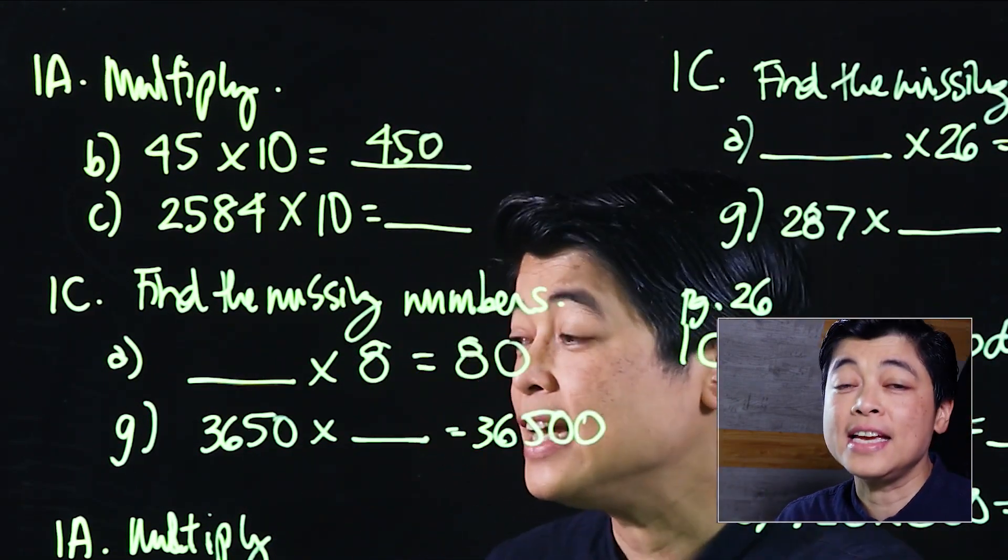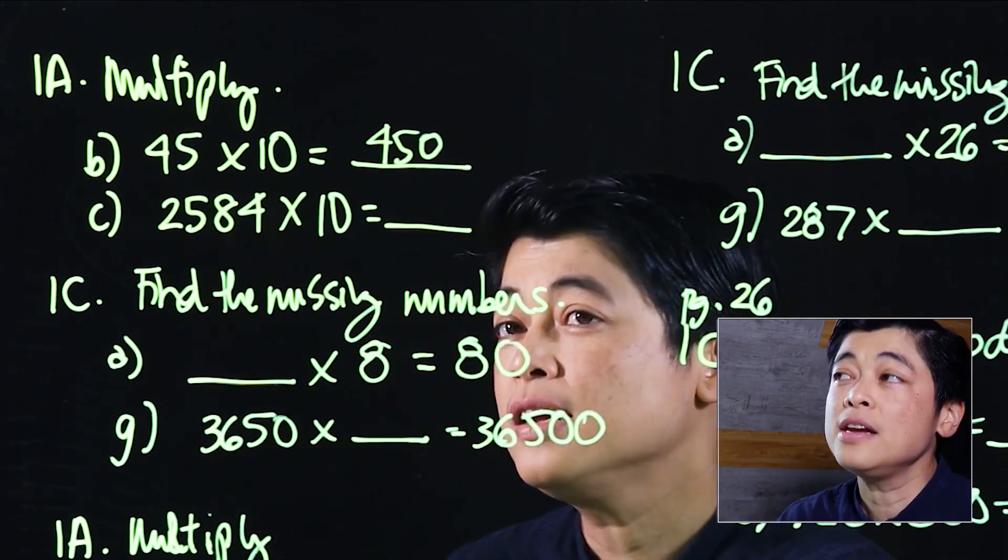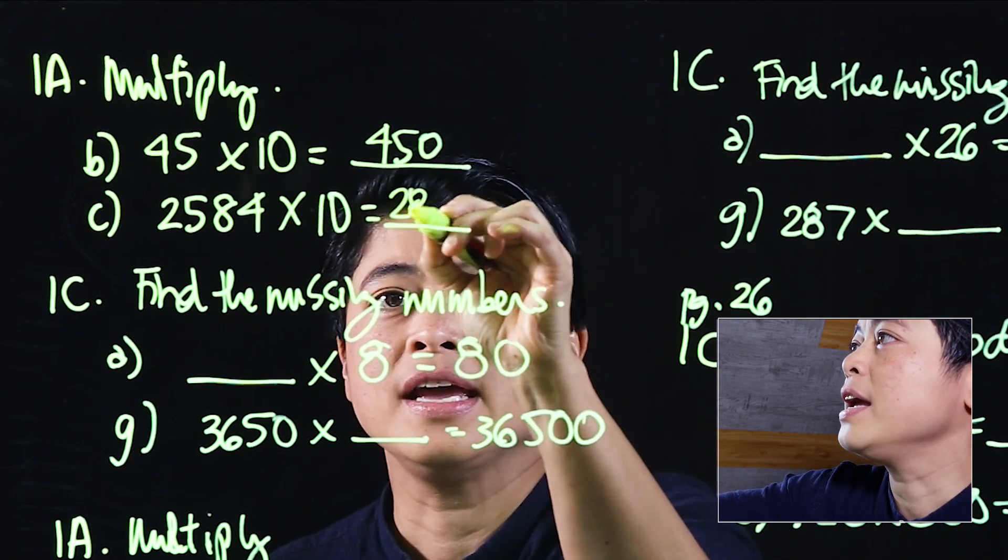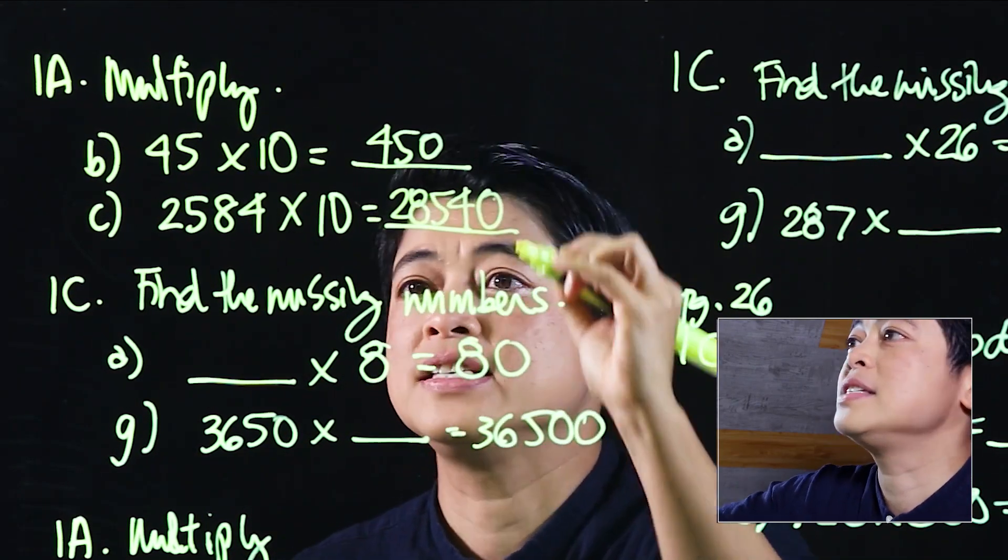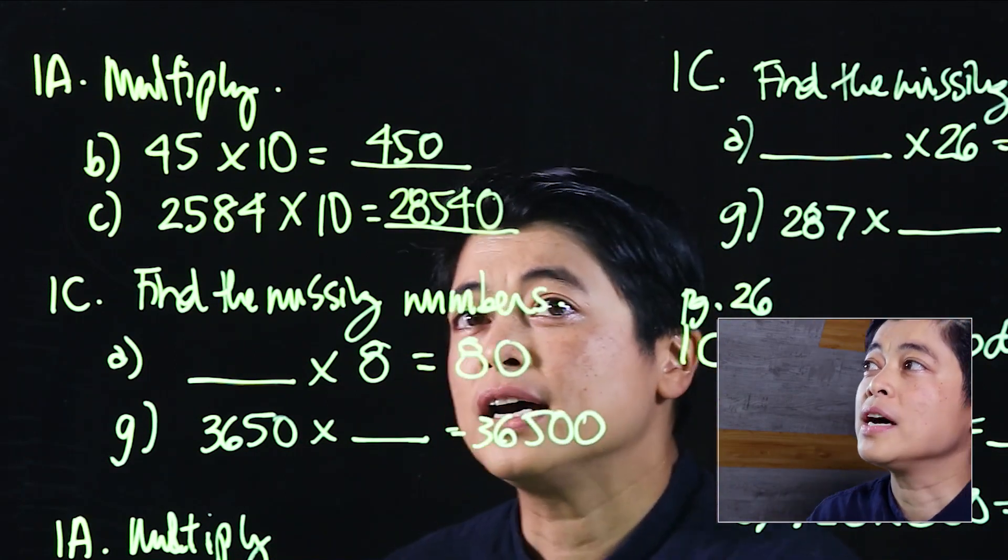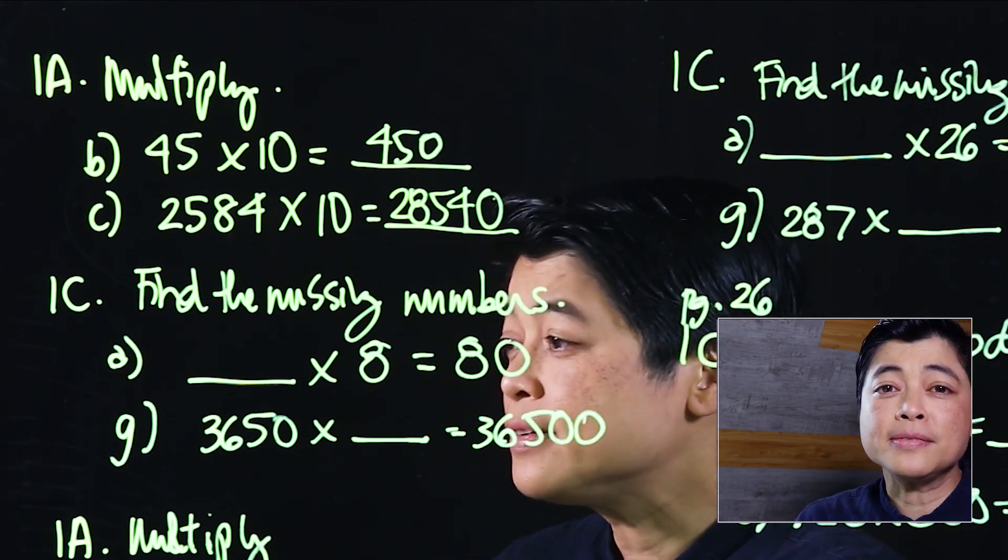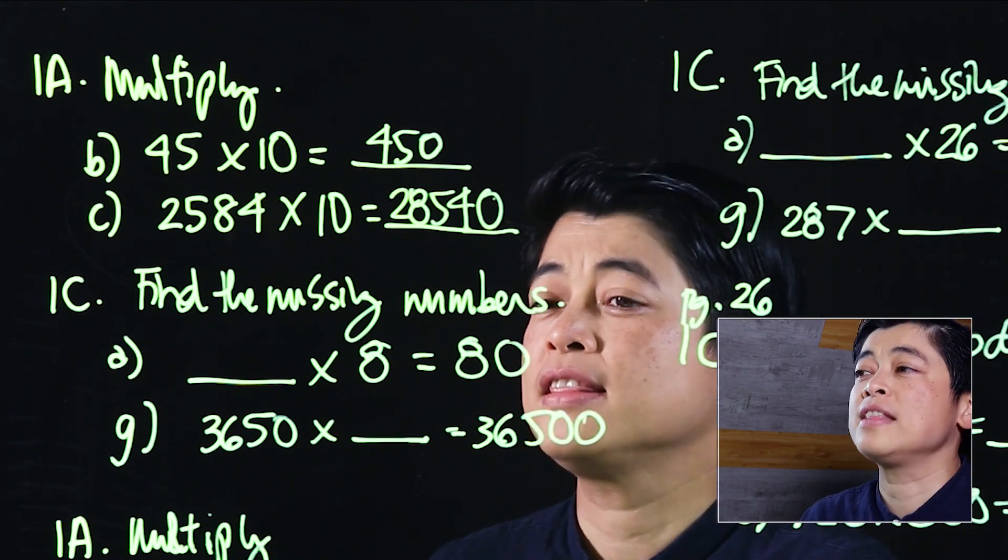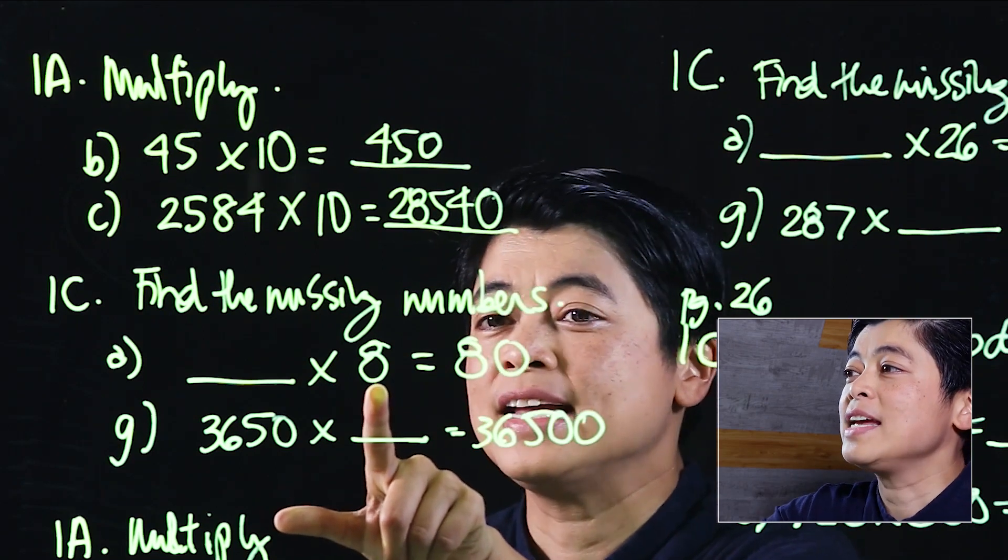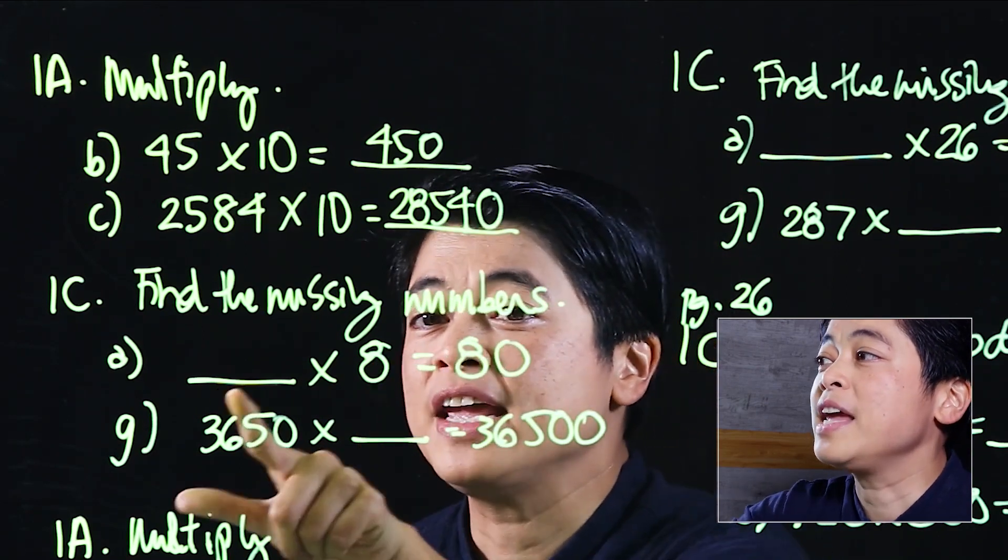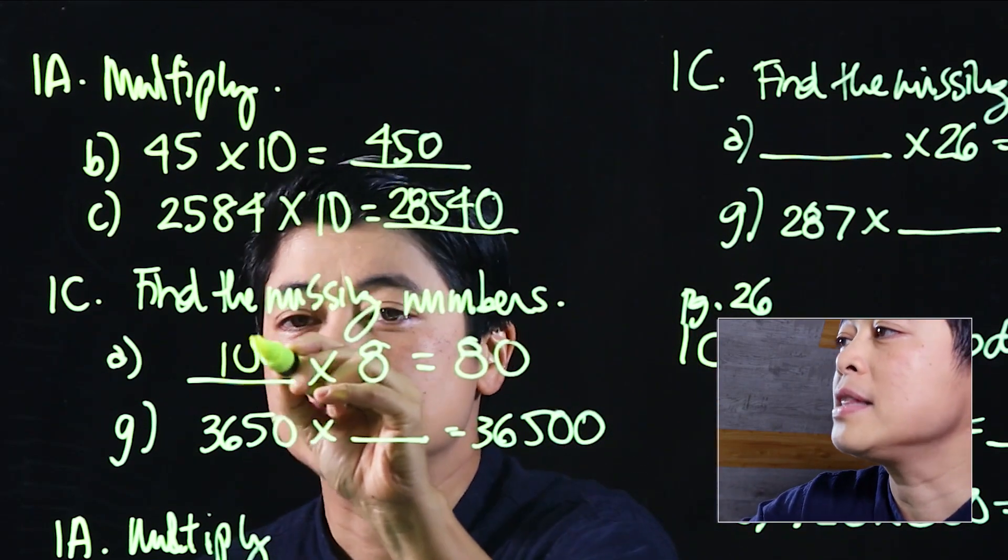Similarly in problem c, since it says 2584 times 10, we take 2584 and add a zero, which means the product is 28,540. In 1c on this same page, it says find the missing number.